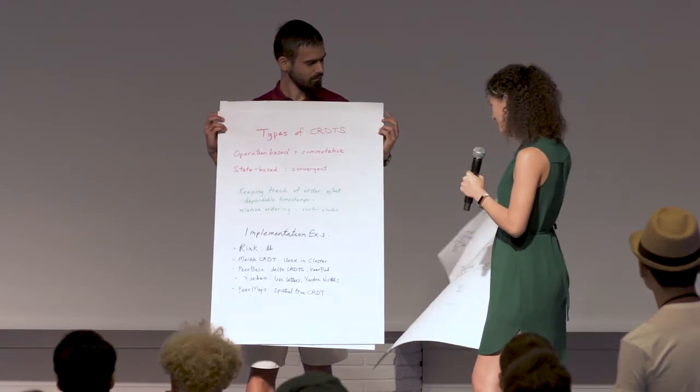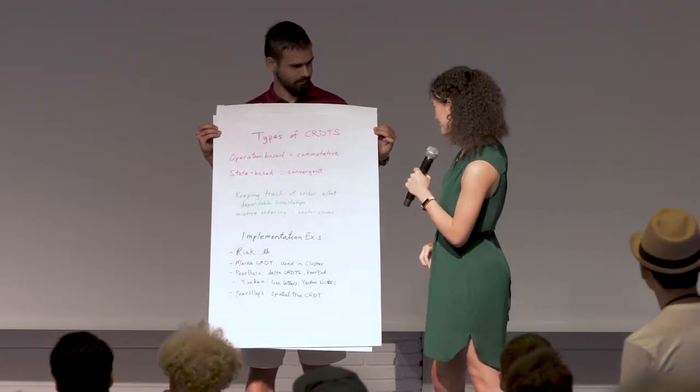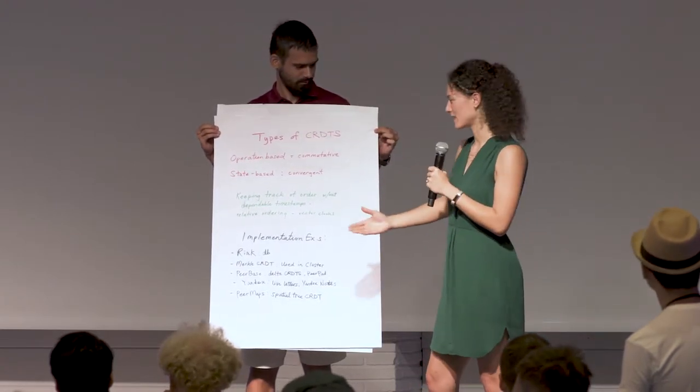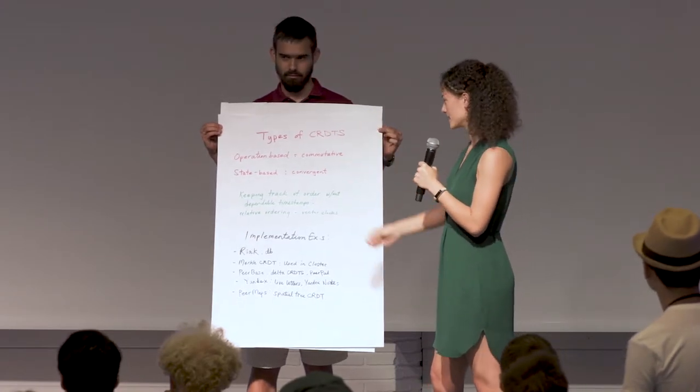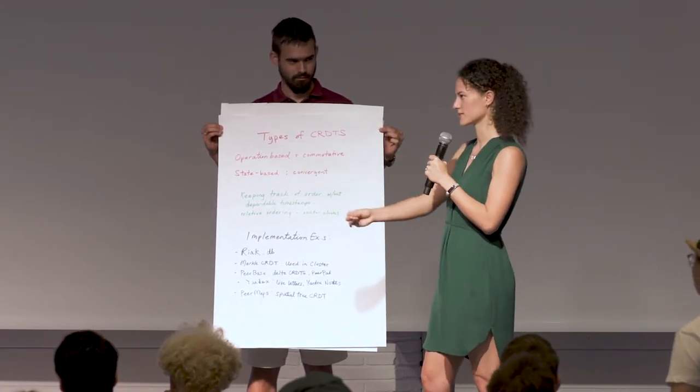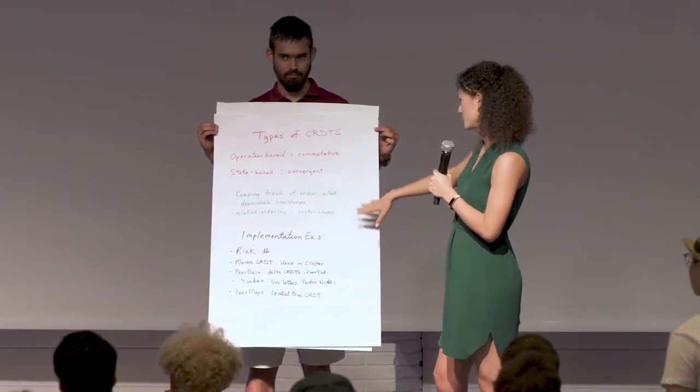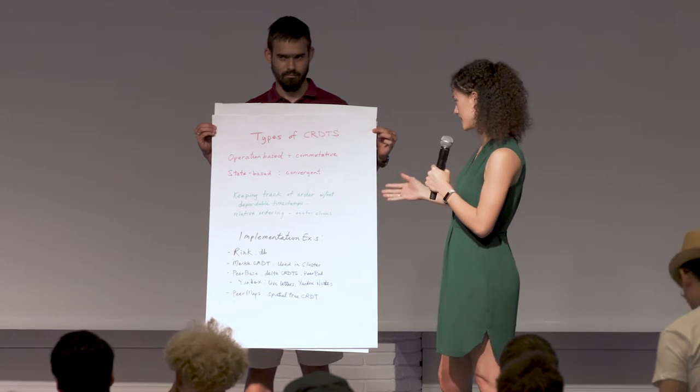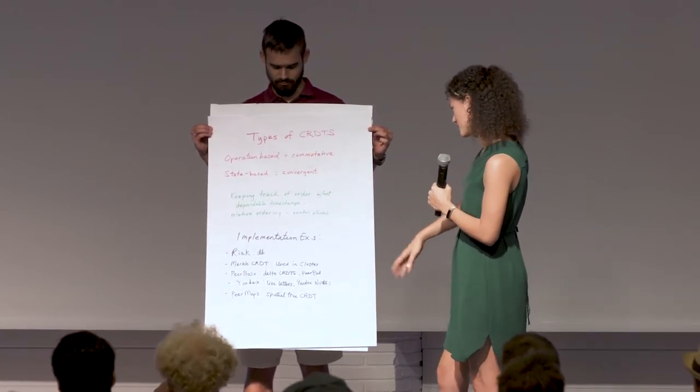Okay, so more types of CRDTs. So we have two main types. We have operation-based, which are commutative, all the changes just get added up. We get state-based, which are convergent, the changes kind of come together after a while. And one main thing here is keeping track of order without dependable timestamps. And so that's why we have this relative ordering, we'll show an example in a minute.